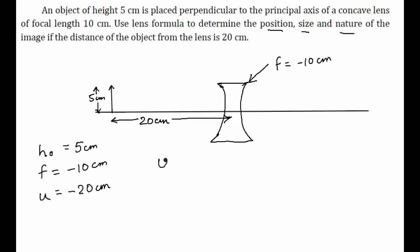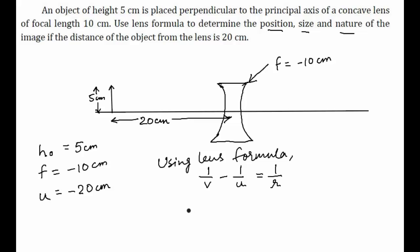Now using the lens formula: 1/v minus 1/u equals 1/f. Here v is to be found, u is minus 20, and f is minus 10. Substituting these values into the formula gives us 1/v minus 1/(minus 20) equals 1/(minus 10).